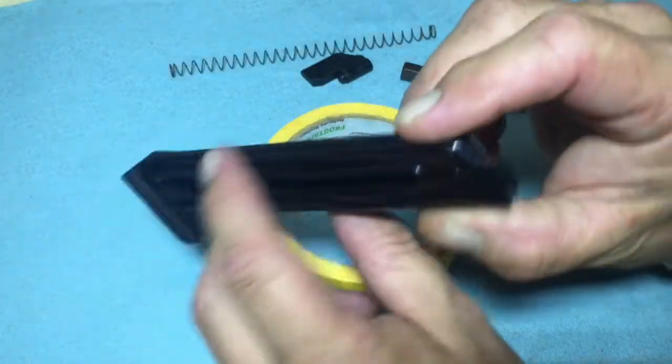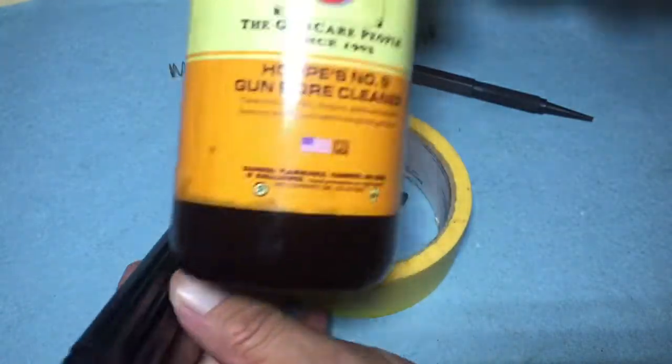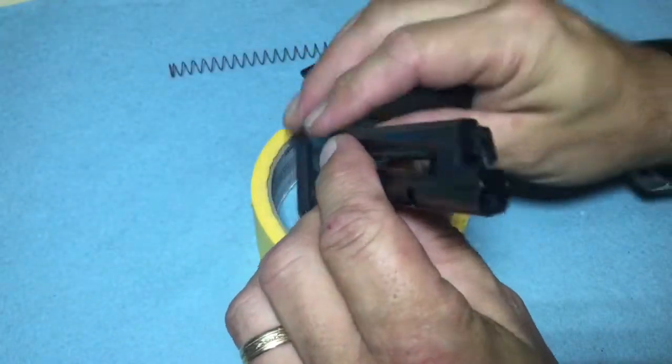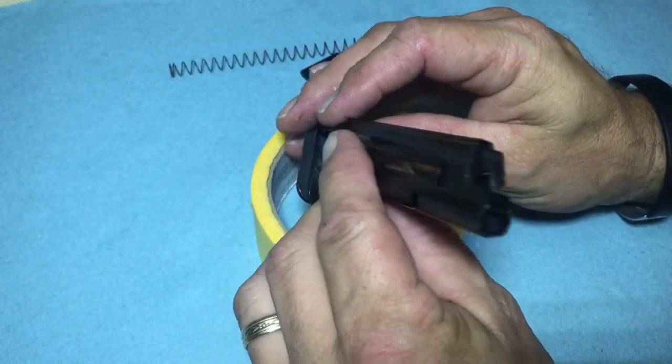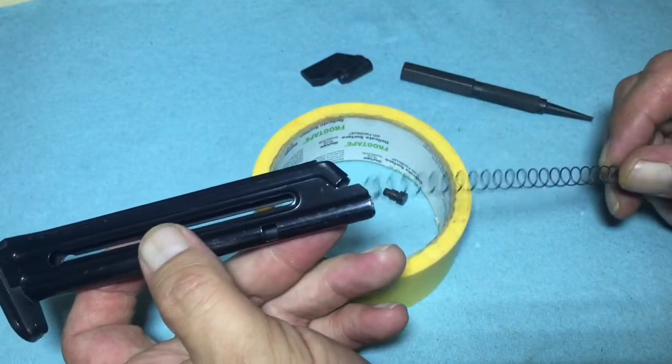Now we can go in there and run a nice - I like to use Hoppe's bore cleaner, Hoppe's No. 9 there - and scrub out any dirt and grime that may be in there. Maybe throw a little rim oil in there and then we'll put it back together. For this video I'll...